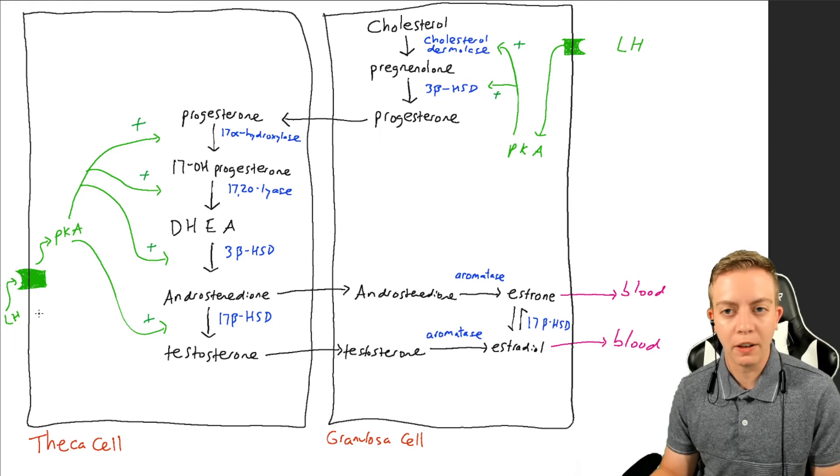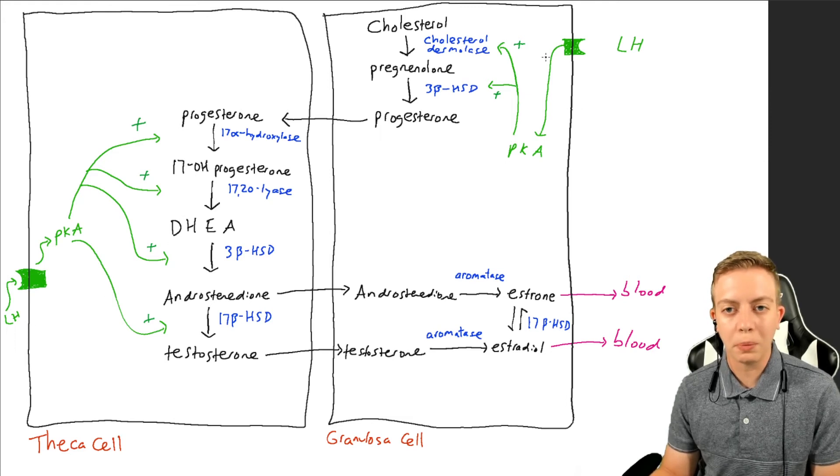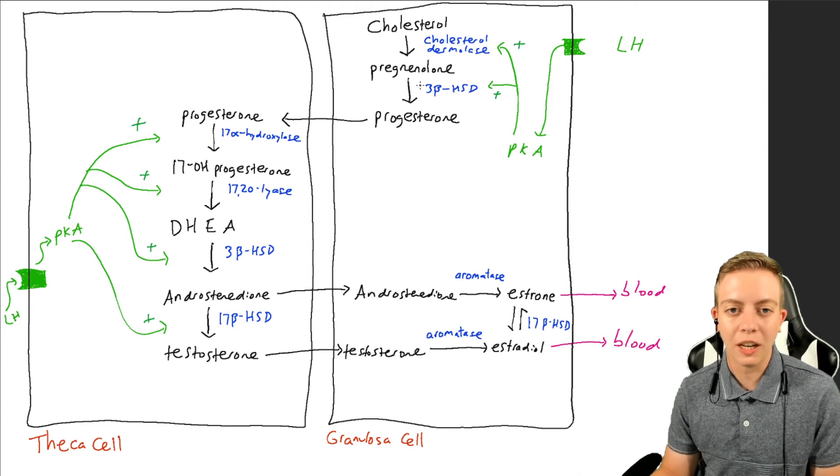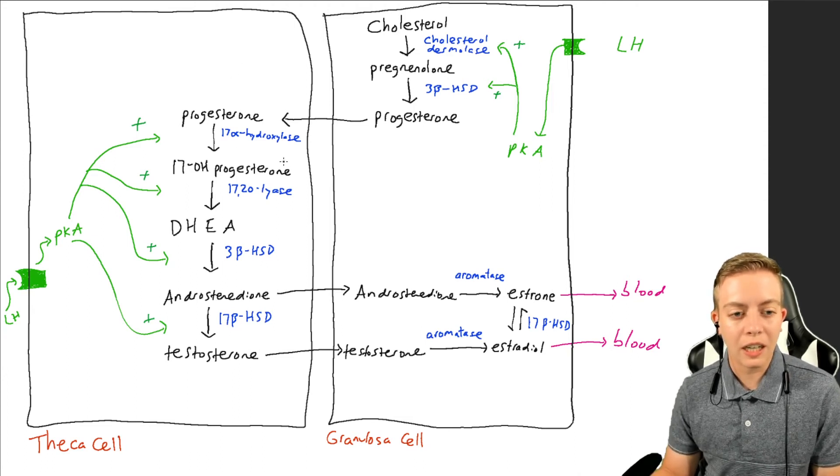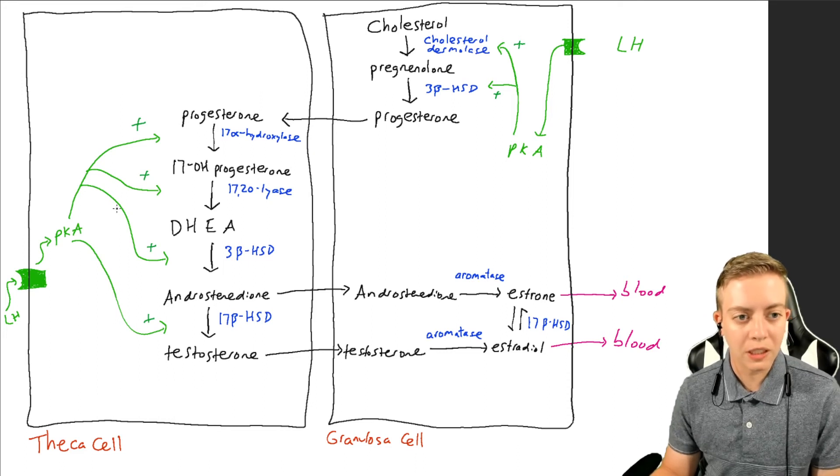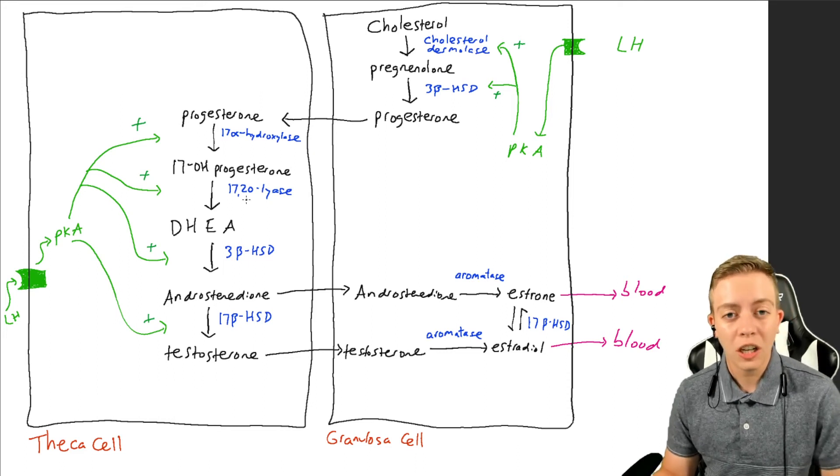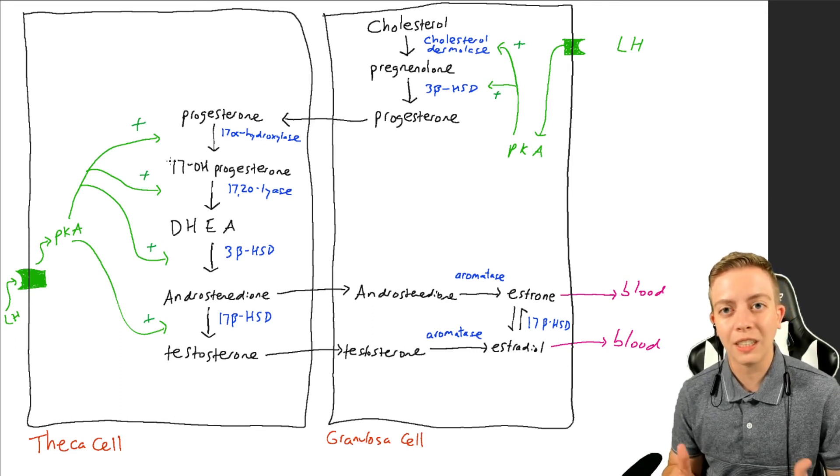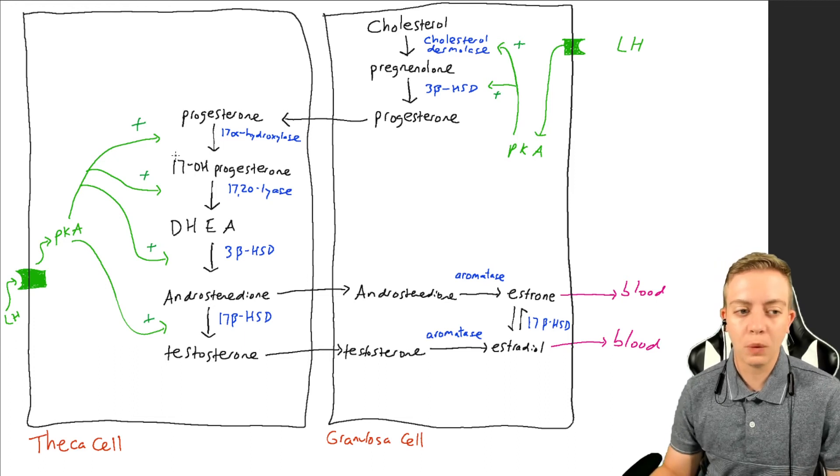have an LH receptor here for both of them. The LH is going to bind to this receptor. It's going to stimulate something called PKA, or protein kinase A, and then that is going to stimulate cholesterol desmolase, 3-beta-HSD, all of these steps in the androgen pathway. So this entire pathway up here, all of these enzymes are increased in synthesis with the release of LH and LH binding to this receptor.